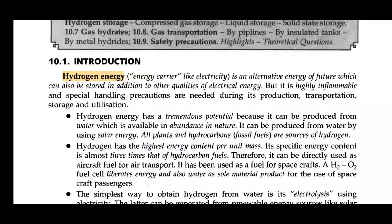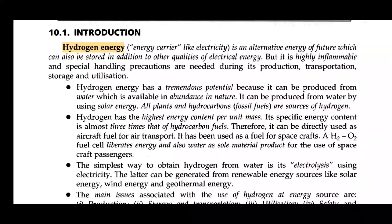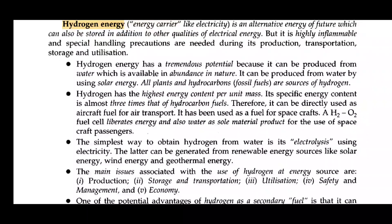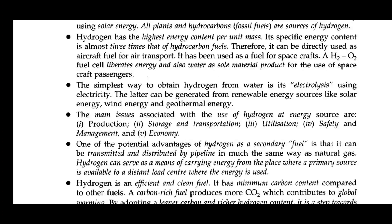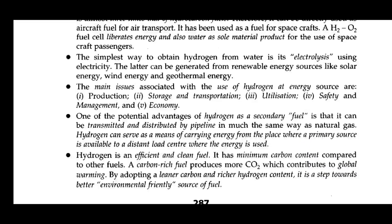Hydrogen has a tremendous potential because it can be produced from water. Hydrogen is available in plenty in nature. Hydrogen has the highest energy content per unit mass. The simplest way to obtain hydrogen from water is electrolysis. The main issues associated with the use of hydrogen as an energy source are: production, storage and transportation, utilization, safety and management, and economy.